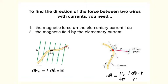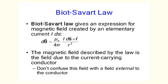The magnetic field created by the elementary current is given by another formula called the Biot-Savart Law. Two French physicists, Jean-Baptiste Biot and Félix Savart, discovered a relationship between the strength of electric current and the strength of the magnetic field created by this current in 1820.